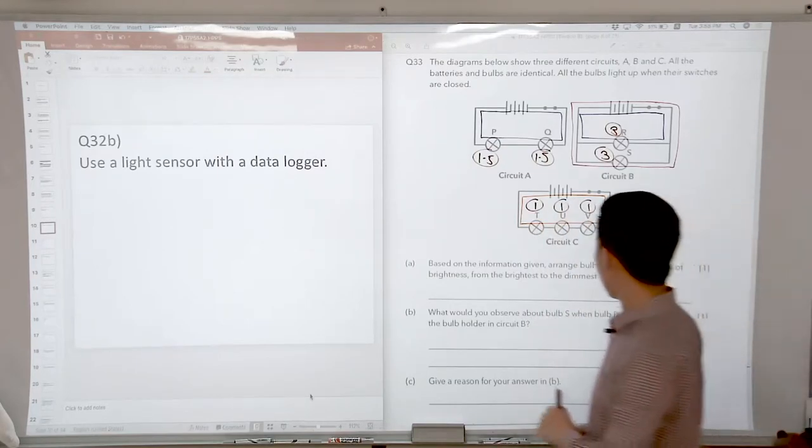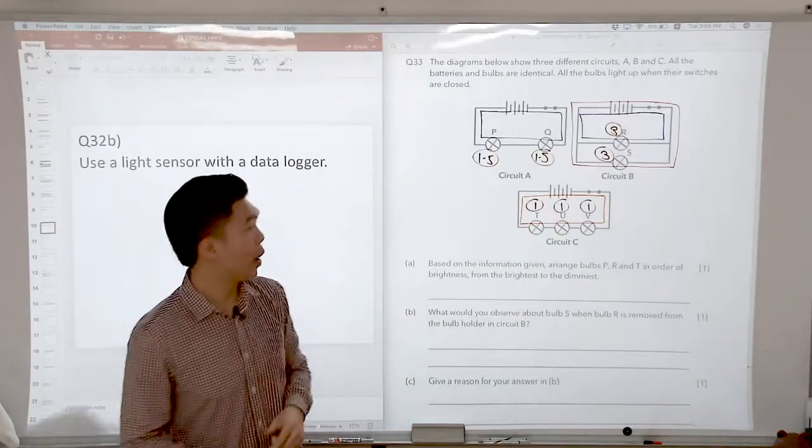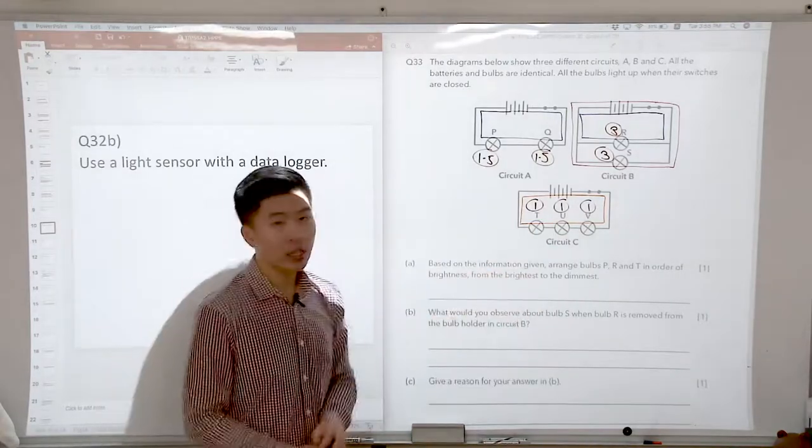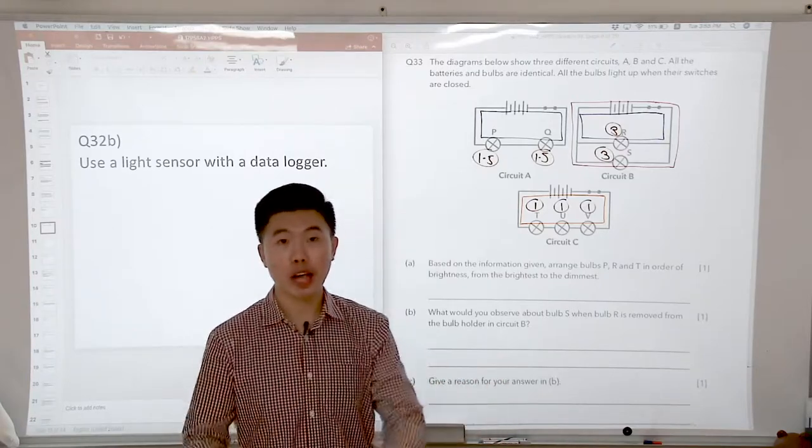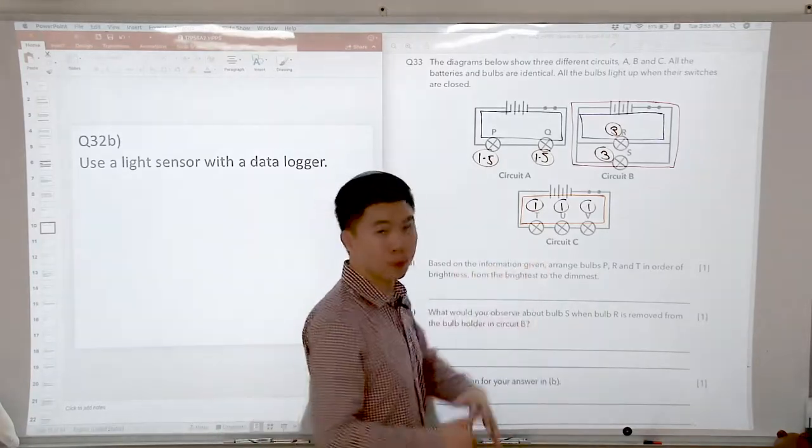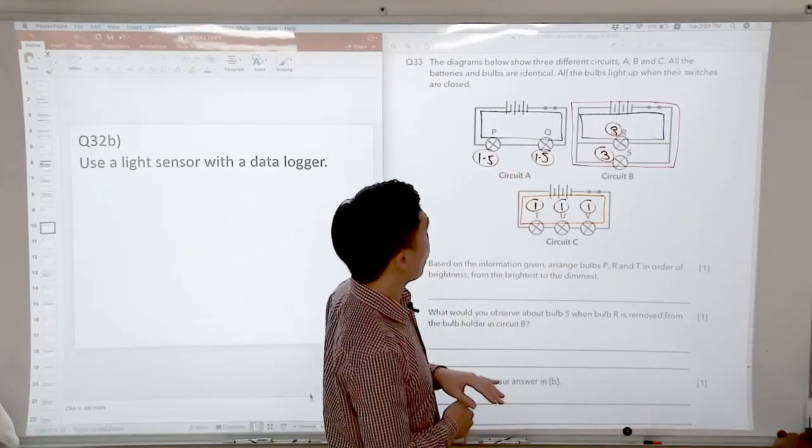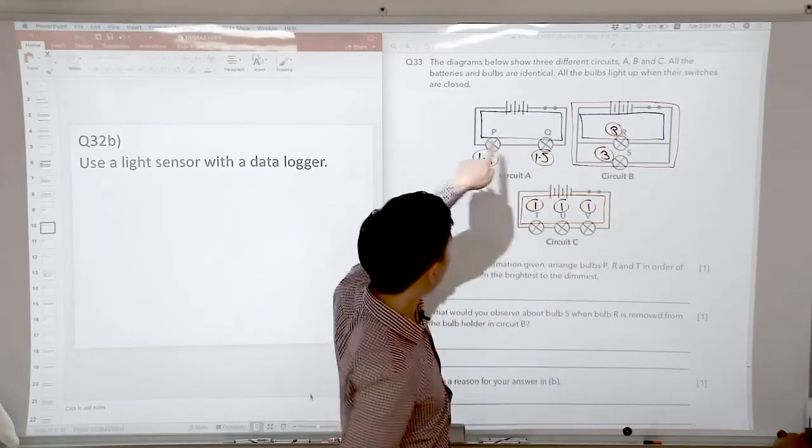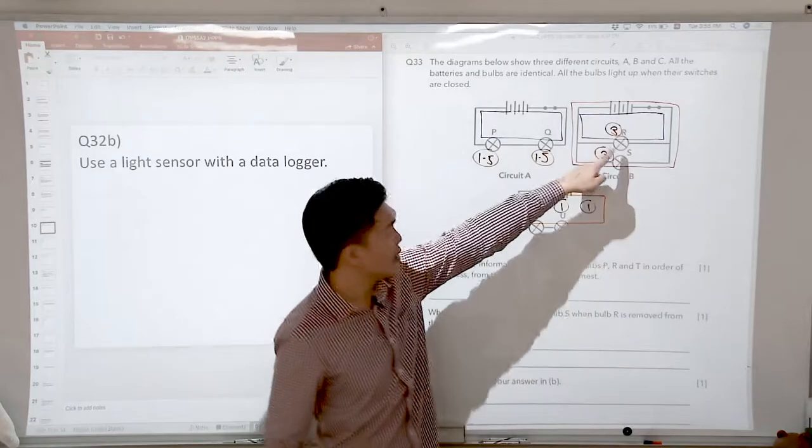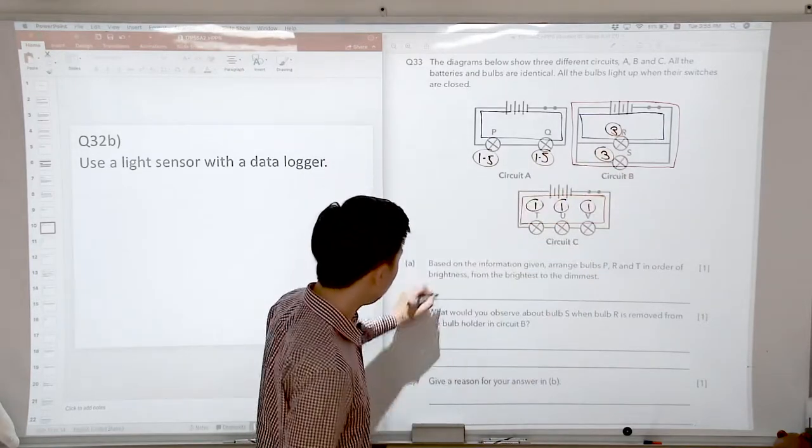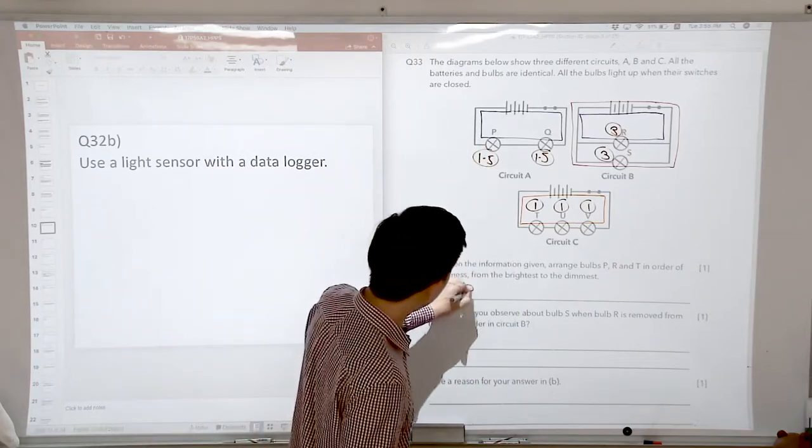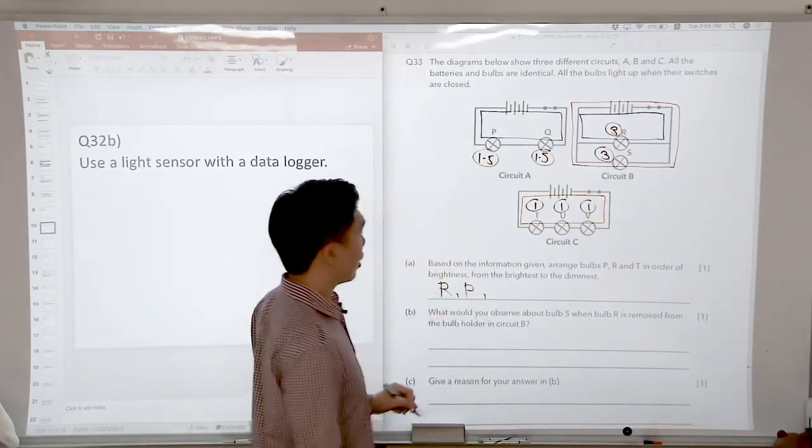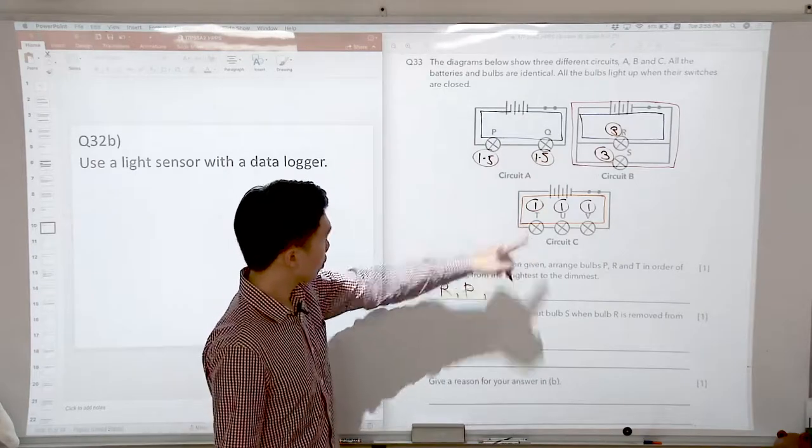So based on the information, arrange the bulbs P, R and T in order of brightness from brightest to the dimmers. So the brightest one is going to be the one that has the largest number because it receives the most electric current. So it's going to glow the most brightly, right? So which one has the largest number? P, R and T. R will come first, R receives the power of three. What is the next one? It's going to be P because it receives 1.5. And the last one is going to be T.